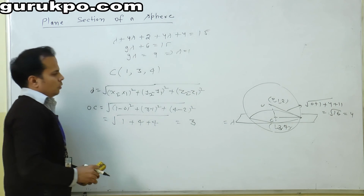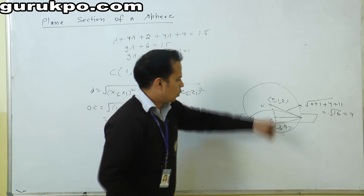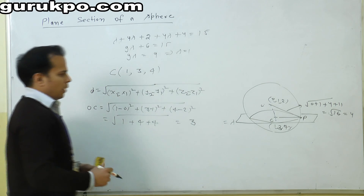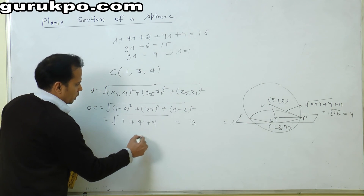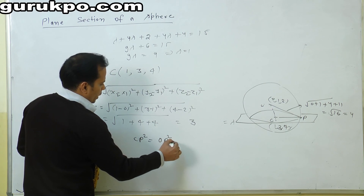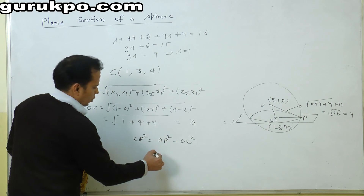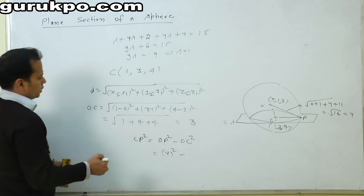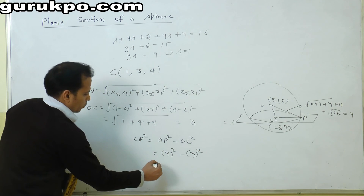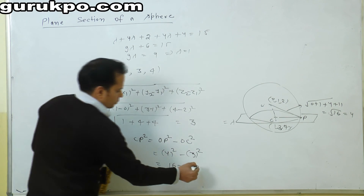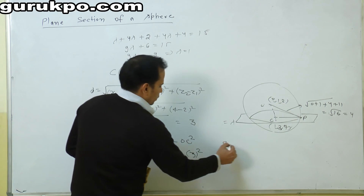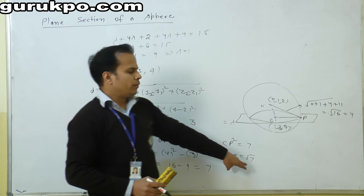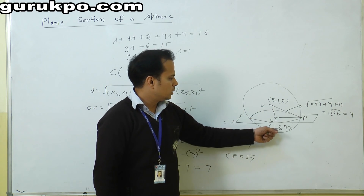Now we know OC = 3 and OP = 4. Using the Pythagoras theorem: CP² = OP² − OC² = 4² − 3² = 16 − 9 = 7. Therefore CP = √7. The radius of the circle is √7 and the center of the circle is (1, 3, 4).